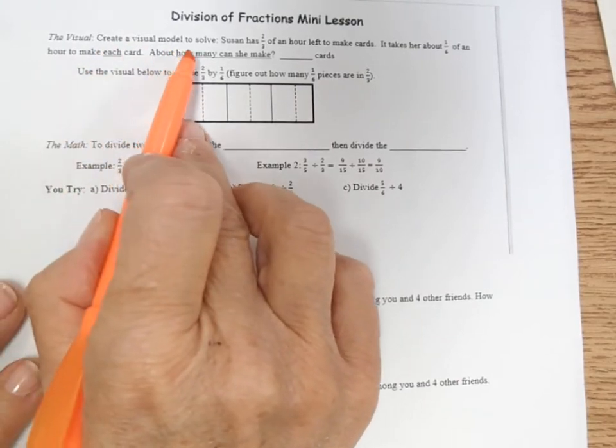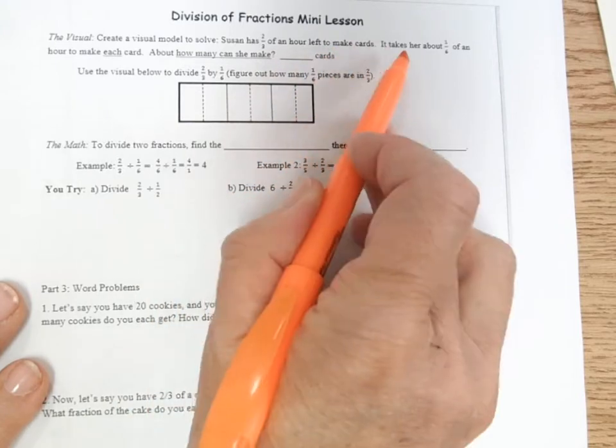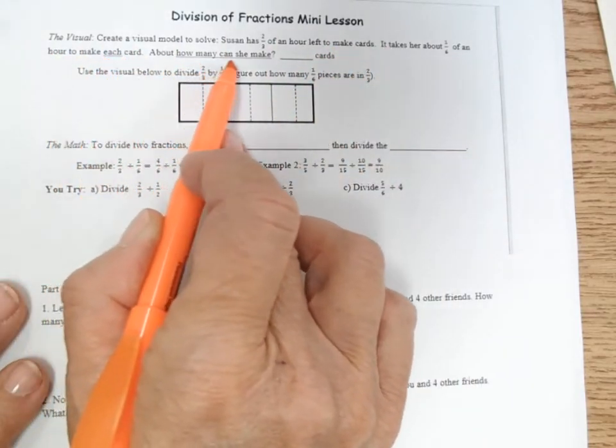The first one says to create a visual model to solve. Susan has two-thirds of an hour left to make cards. It takes her about one-sixth of an hour to make each card. About how many can she make?